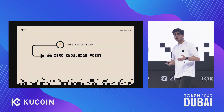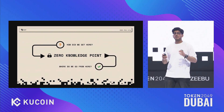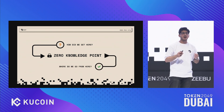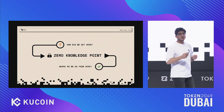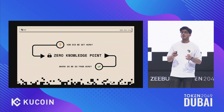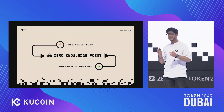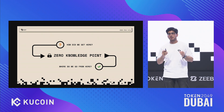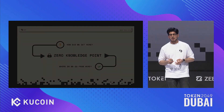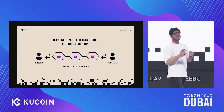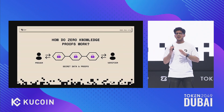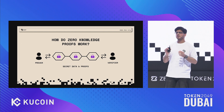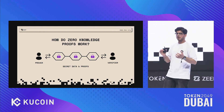Where do we go from here? We go to Data Ownership Protocol. We are making sure this problem gets solved for the people in an easy way and in a secure way. So now, let's understand a little how zero-knowledge works, how these proofs work.